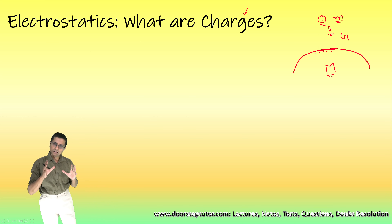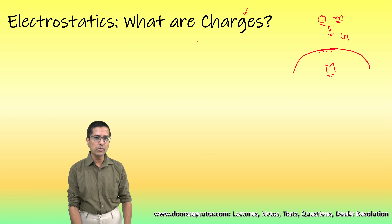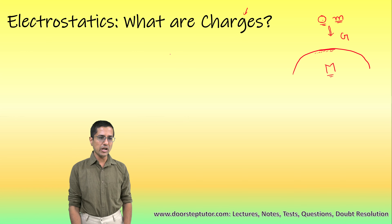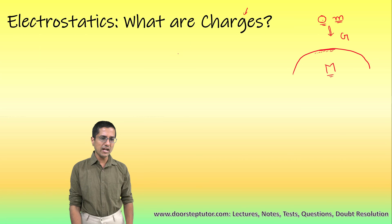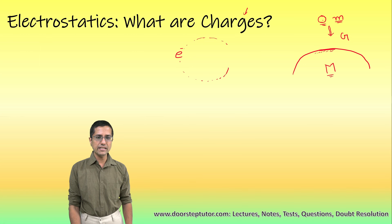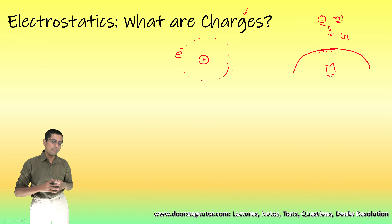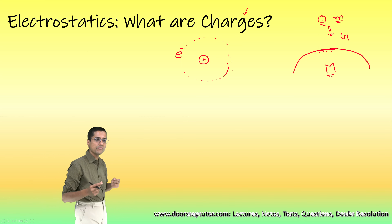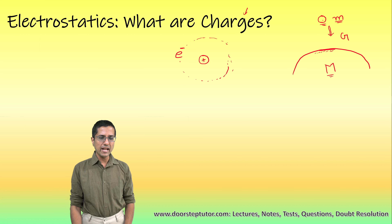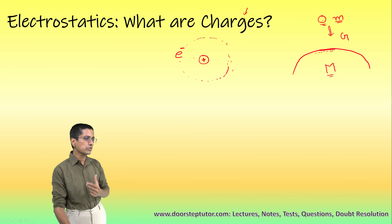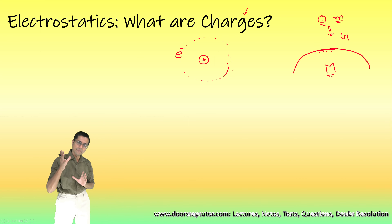Very similar to the intrinsic property of mass, we also have another property of a body which is known as charge. A very simple and common example of a body having charge is that of an electron. An electron revolves around the nucleus in an atom, and the nucleus also has a charge. When we say a body has a charge, it means it has a non-zero charge.